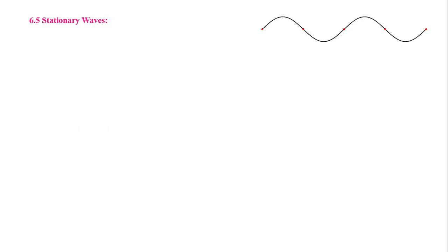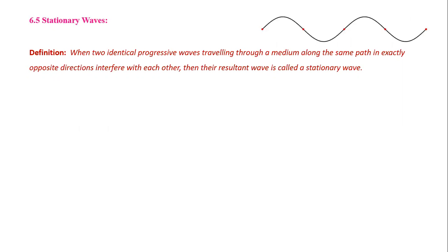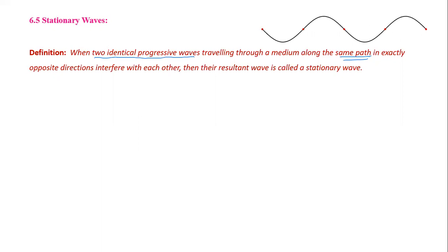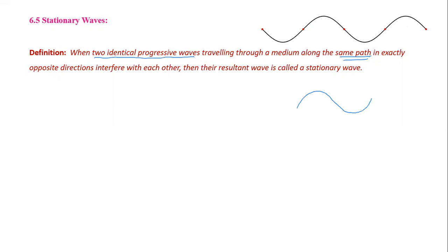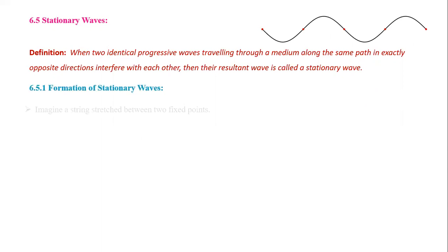A stationary wave is a result of superposition of two waves traveling in opposite directions. When two identical progressive waves traveling through a medium along the same path in exactly opposite directions interfere with each other, the resultant wave is called a stationary wave. The first wave travels along the positive x-axis and another travels toward the negative x-direction; when they interfere, we get a wave in the form of loops called a stationary wave.